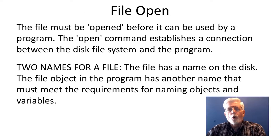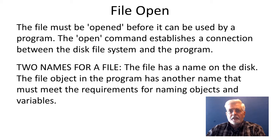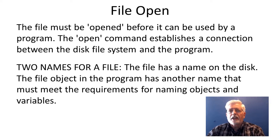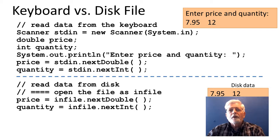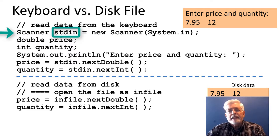The file must be opened before it can be used by a program. The open command establishes a connection between the disk file system and the program. A file has two names: the file has a name on the disk, and the file object in the program has another name that must meet the requirements for naming objects and variables. The Scanner object could be named stdin, keyboard, kbd, etc.